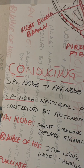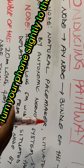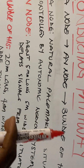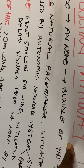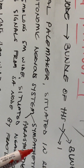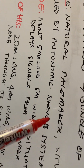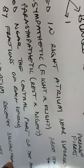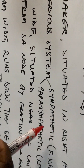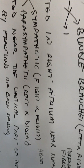What does the SA node do? The SA node is referred to as the natural pacemaker of the heart — it determines the pace of the heart. It is situated in the right atrium near the superior vena cava, and it is about 5 millimeters long and 4 millimeters wide.